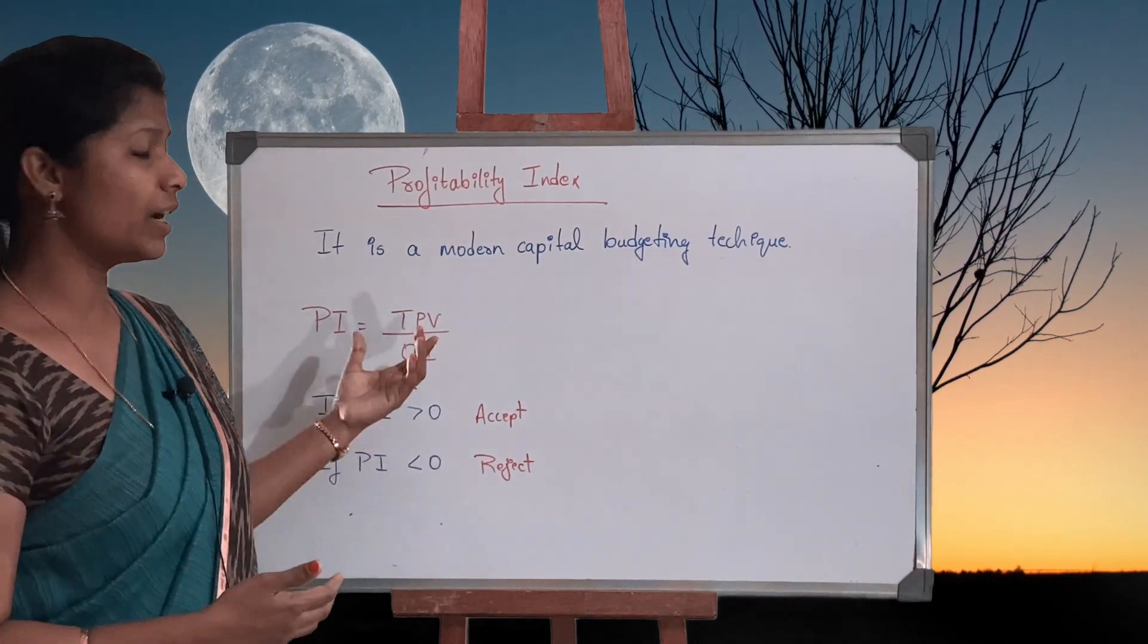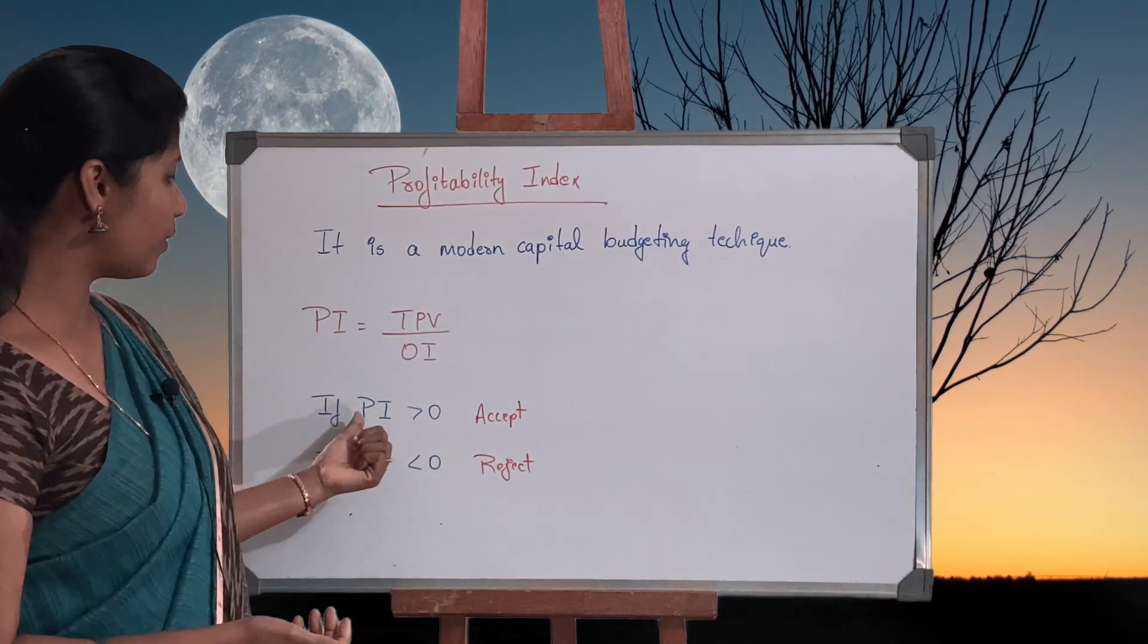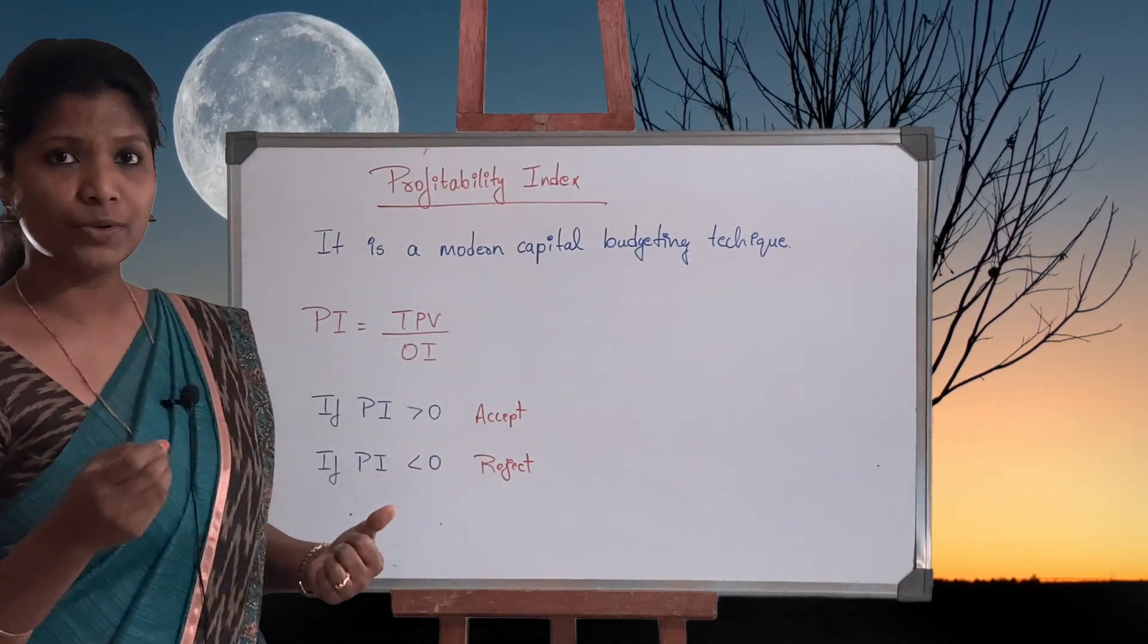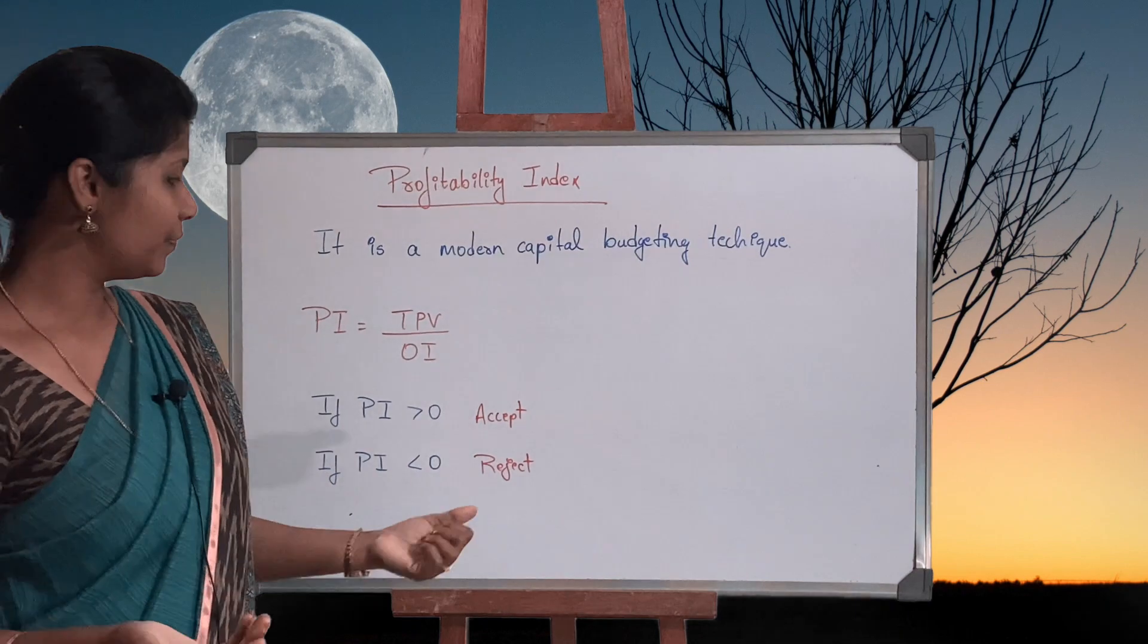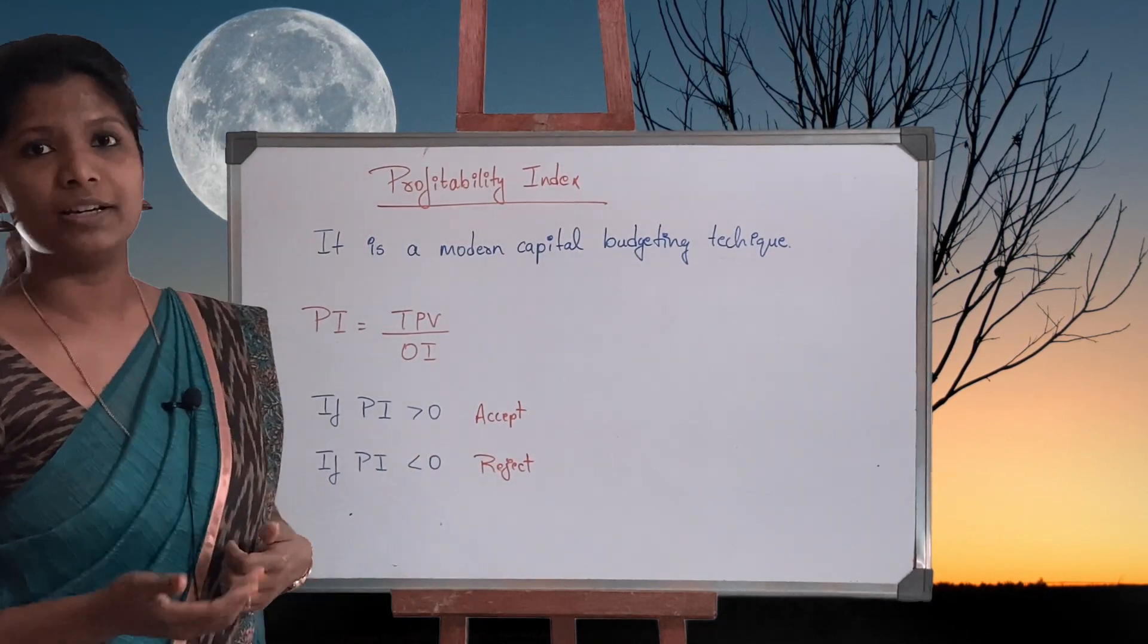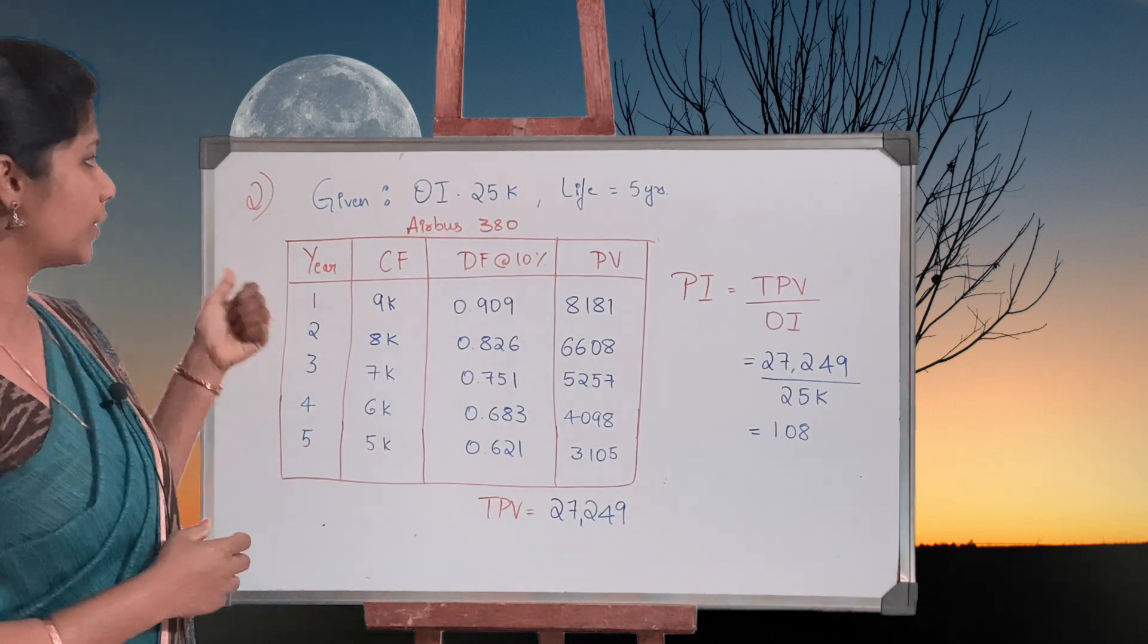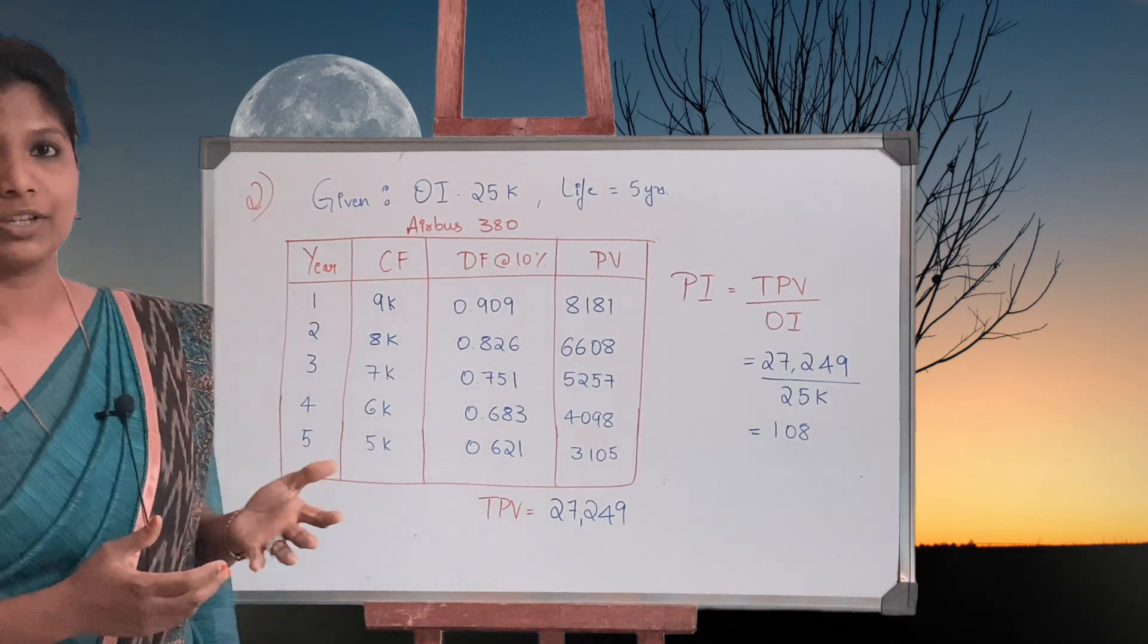If Profitability Index value is anything above zero, we have to accept it. Anything below zero, we need to reject it. So let us solve problems on Profitability Index. I am starting with the second question.